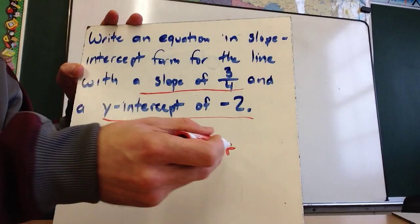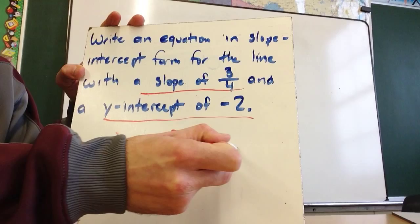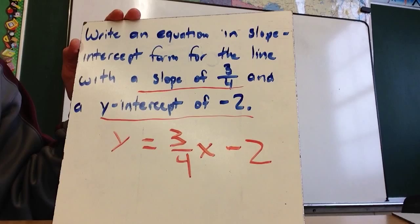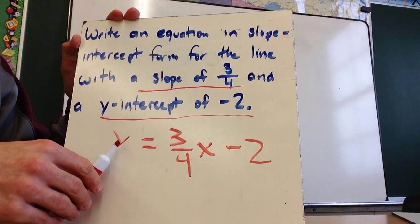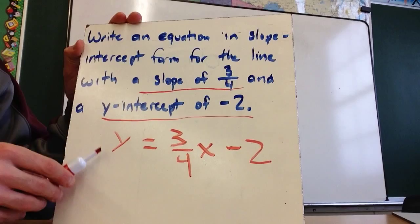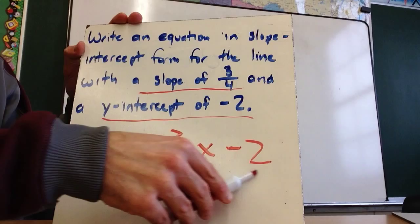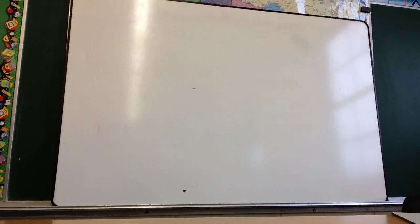And so this could be plus negative 2. So how I want to write this is instead of writing plus negative 2, I just want to write minus 2. Remember we talked about the subtraction sign and the negative sign being identical, and that's not by coincidence. So the formula for this line that has a slope of 3 fourths and a y-intercept of negative 2 is y equals 3 fourths x minus 2. y equals mx plus b. All right.